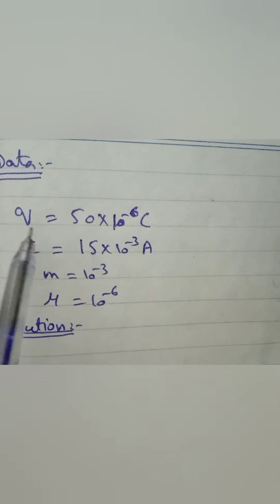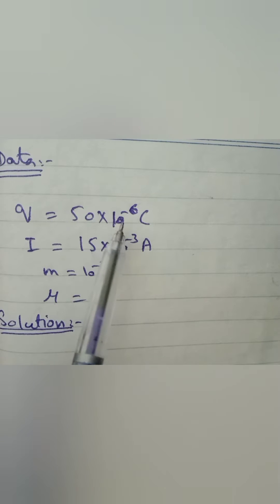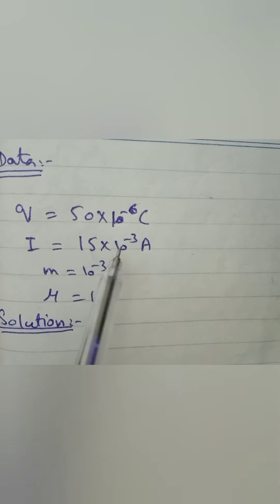We have given charge is equal to 50 micro coulombs, and micro is 10 to the power minus 6. Current is 15 mA, and milli is 10 to the power minus 3.